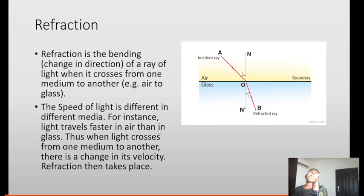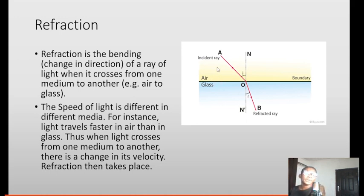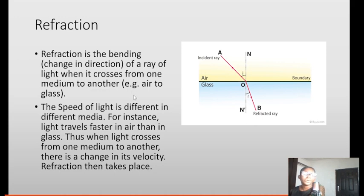So what is refraction? Just as we said that reflection is the bouncing back of light rays, refraction occurs between two media. For example, look at this light ray — it's coming from air and it entered glass. That is when refraction occurs. Refraction is the bending, that is changing direction, of a ray of light when it crosses from one medium to another — for example from air to glass.